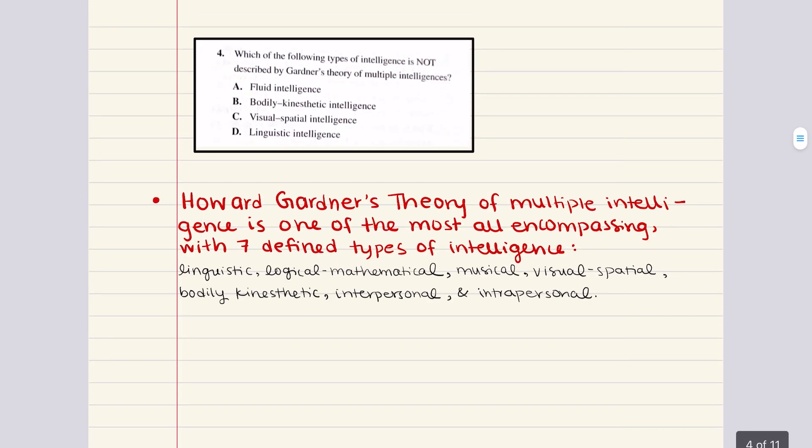Problem four says which of the following types of intelligence is not described by Gardner's theory of multiple intelligences? A says fluid intelligence, B says bodily kinesthetic intelligence, C says visual spatial intelligence, and D says linguistic intelligence. I have the list of these seven defined types of intelligence here based off of Howard Gardner's theory. The only one that isn't part of this list is fluid intelligence. Fluid intelligence consists of problem solving skills. It's not one of Gardner's seven multiple intelligences. Gardner's theory lists linguistic, logical mathematical, musical, visual spatial, bodily kinesthetic, interpersonal, and intrapersonal intelligences. So four is A.